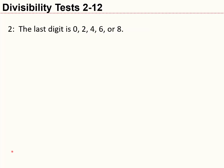Let's talk about divisibility tests for the numbers 2 through 12, to determine if any of those numbers is a factor of some bigger number. To start off easy — you've probably seen this before — how do you know if a number is divisible by 2? You just look at the last digit. If it ends in 0, 2, 4, 6, or 8, then the number is divisible by 2.